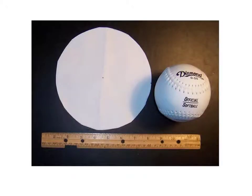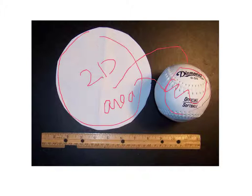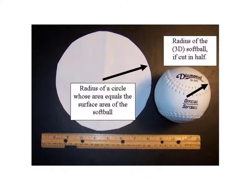We're going to step this up now to two dimensions. We take our circle, a 2D area, and we can curve it around to form a three-dimensional sphere. In this particular case, the area of this 2D circle is equal to the surface area of the softball, which is a three-dimensional object. And again, we find that our 2D radius is larger than the radius created in three dimensions by the same surface area.